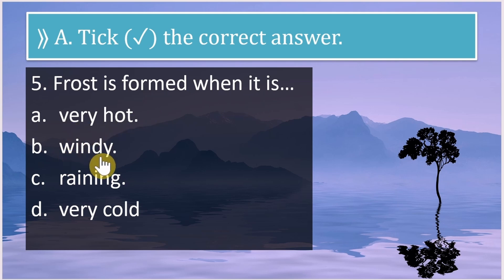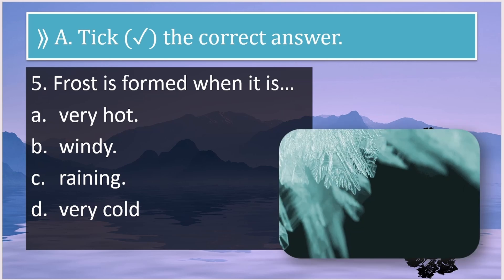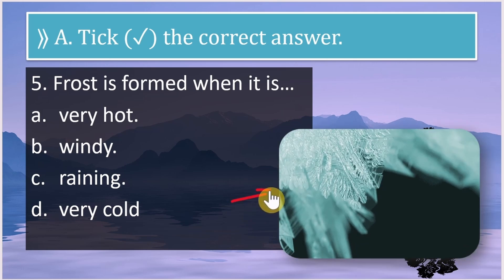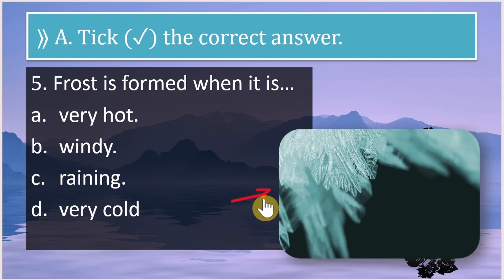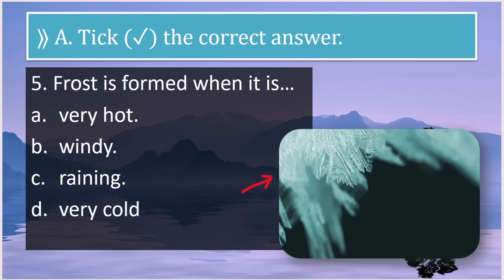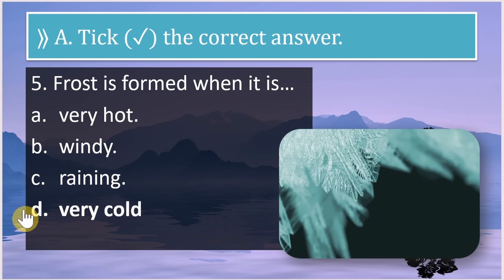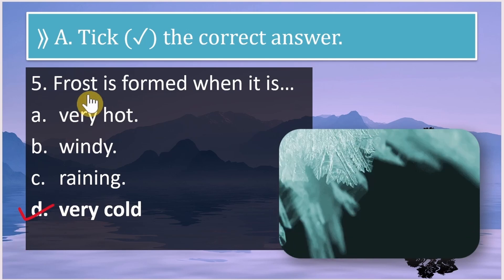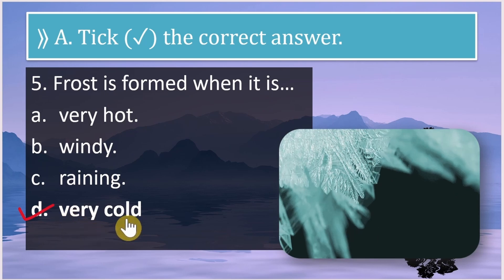Frost is formed when it is — very hot, windy, raining, or very cold? Before answering, here is how frosting takes place. The correct answer is D — very cold. Frost is formed when it is very cold.